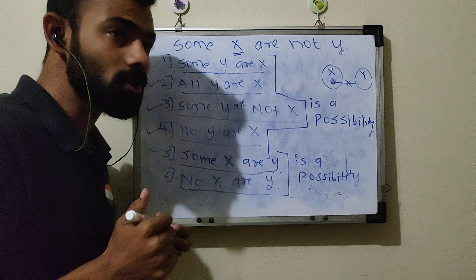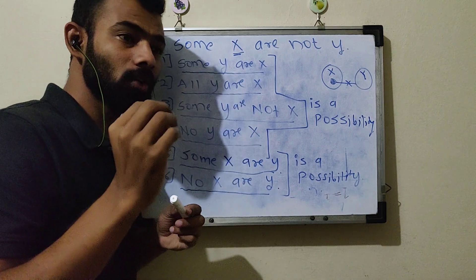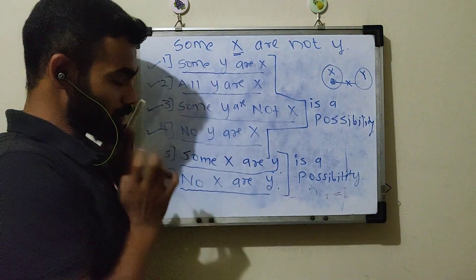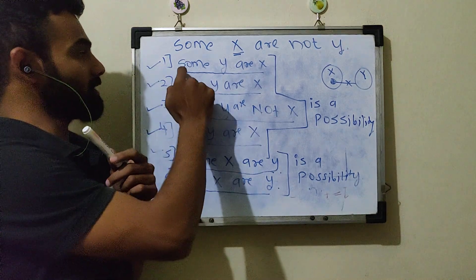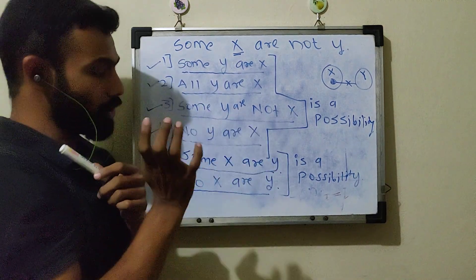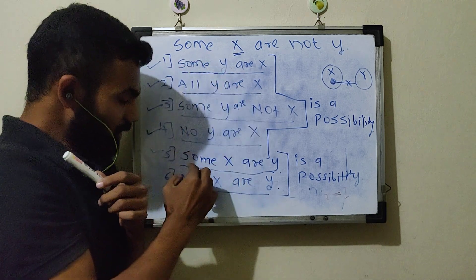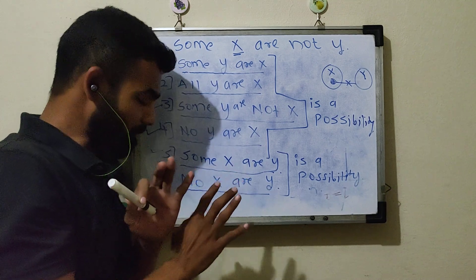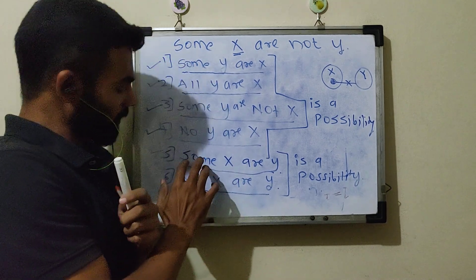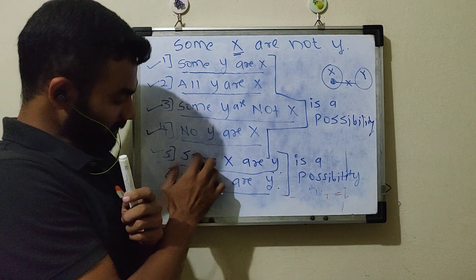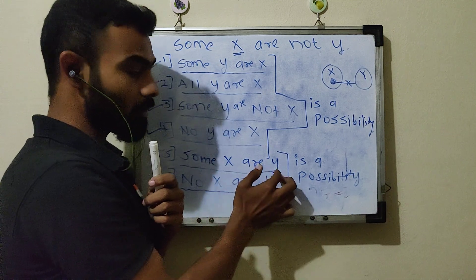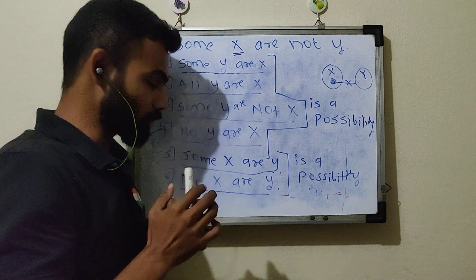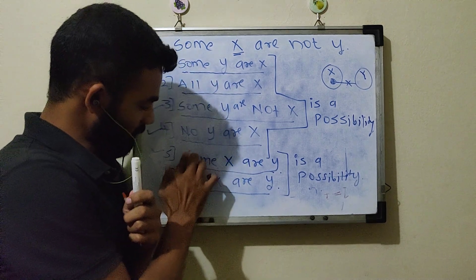अभी कुछ students के mind में थोड़ा confusion होगी। जैसे in this case — हमने Some, All, Some not, और No — चार primary keywords लिये। तो कुछ students पूछेंगे कि sir, 'All X are Y is a possibility' — तो कुछ बोलेंगे कि sir ये correct हो सकता है।